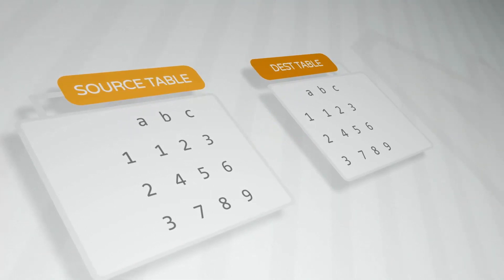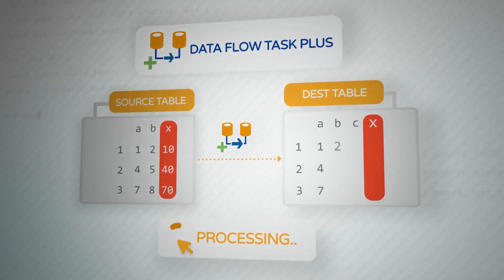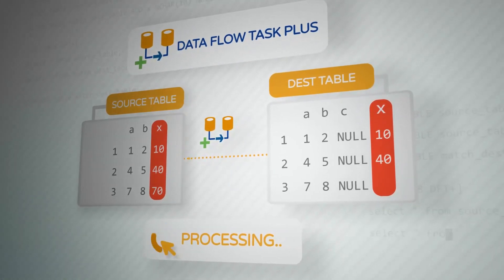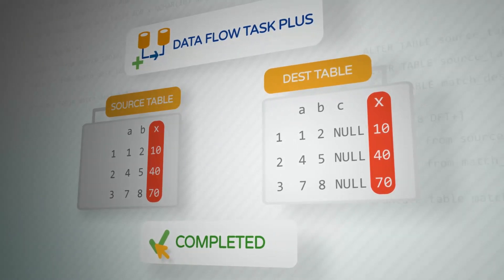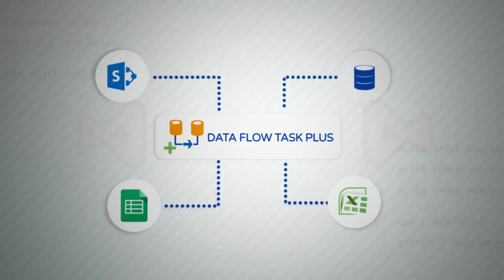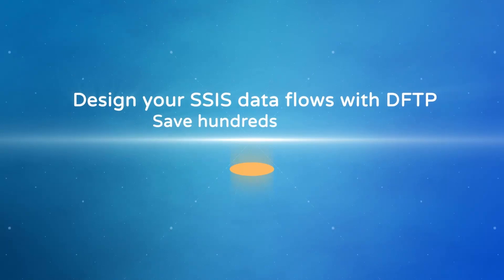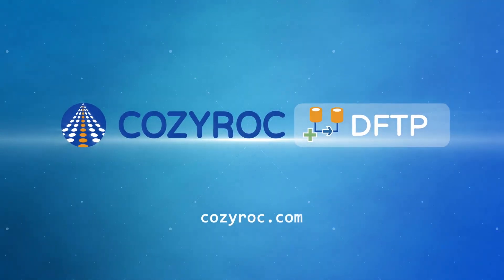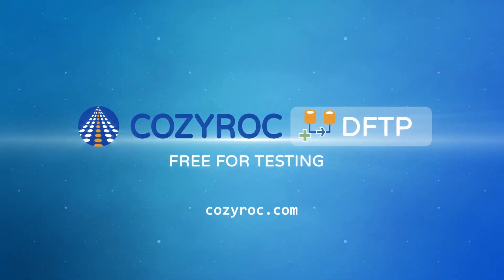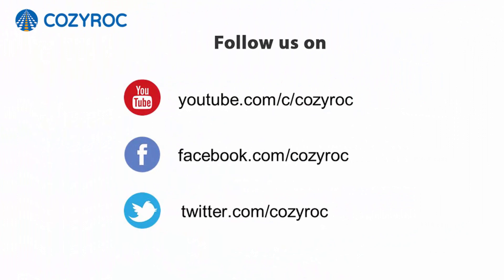You can use transformations on the data, just add changes at the source and destination. DataflowTask+ will handle extracting, transforming, and loading the desired columns from source to destination without needing to change the existing package. It works with any standard SSIS dataflow components, transformations, and application adapters - no more manual package updates. Download CozyRocks DataflowTask+ from cozyrock.com - it's free for testing and development within Visual Studio.